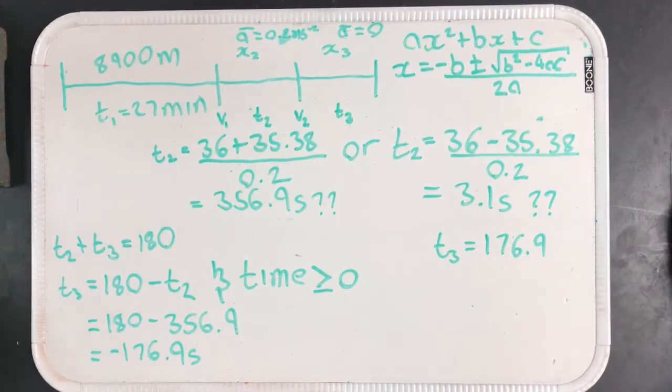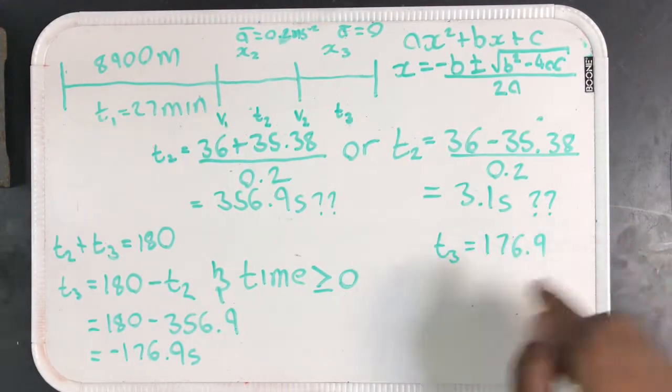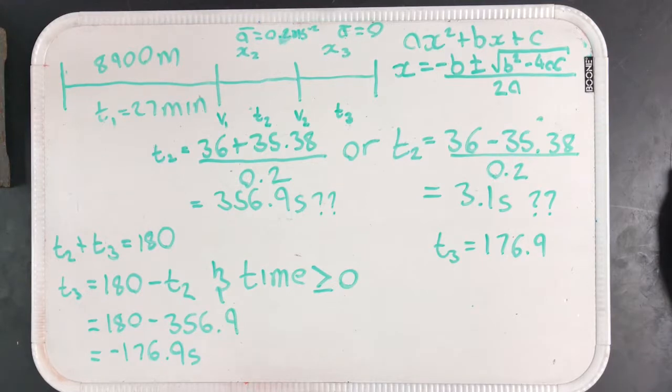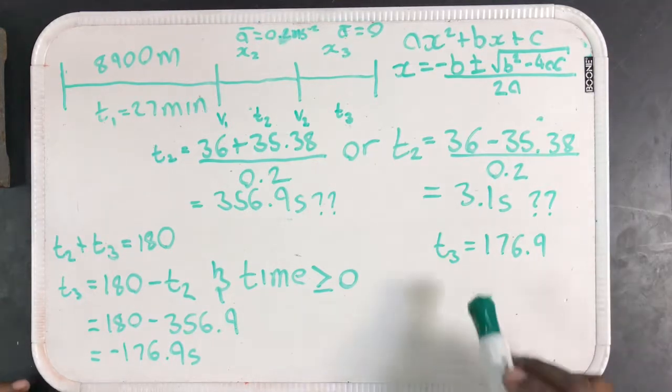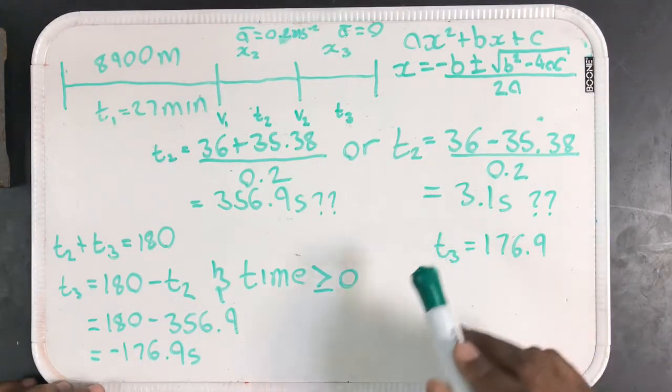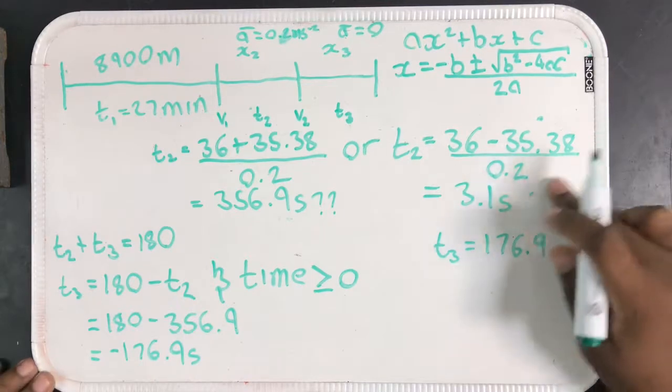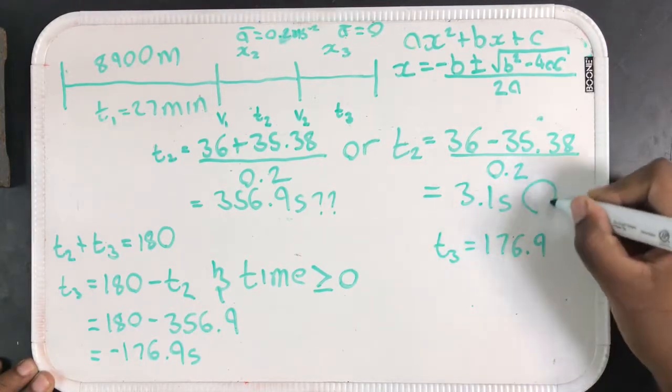At the end of the day, the time taken, or the time that Bobby J needs to accelerate for in order to complete this race in under three minutes is 3.1 seconds.